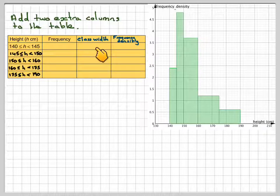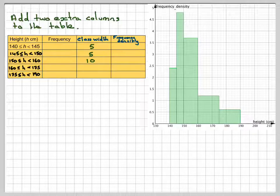We can work out the class width of each one by subtracting. So the first one's 5, then 5, 10, 15, and 15.